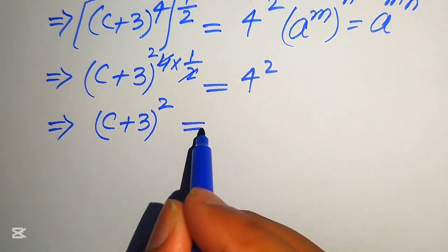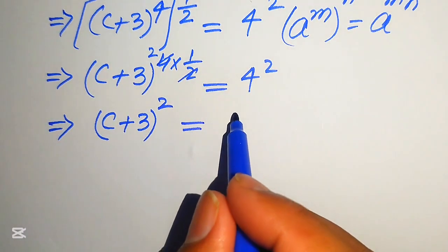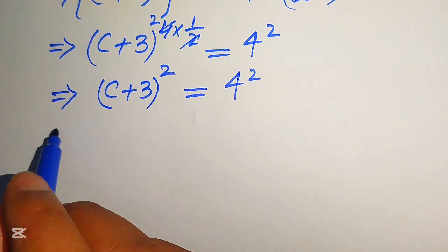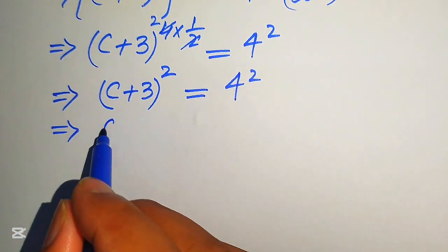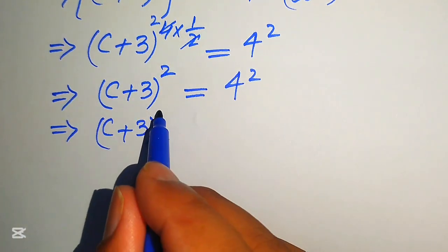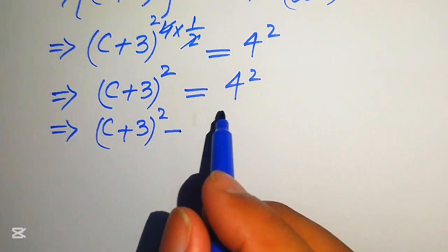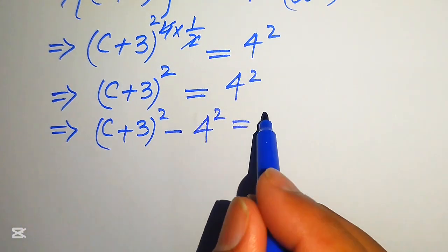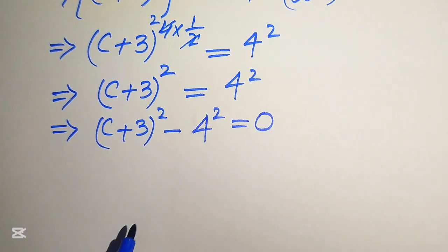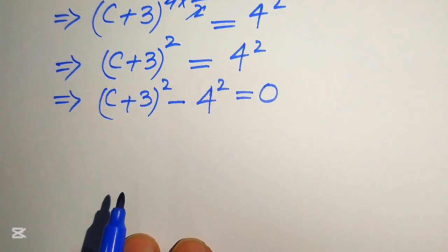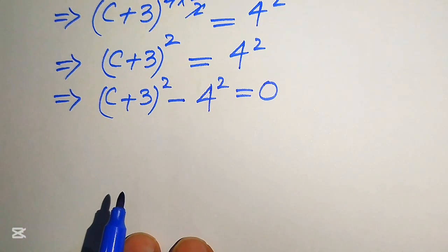We get (c + 3) squared equals 4 squared. Now we move the 4 squared to the left hand side — it becomes negative — and we have (c + 3) squared minus 4 squared equals 0.